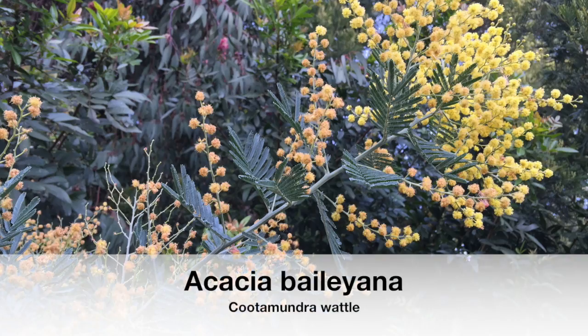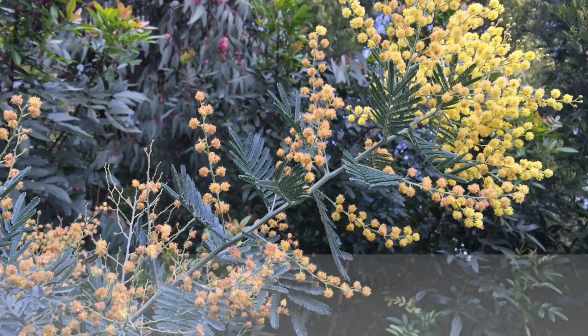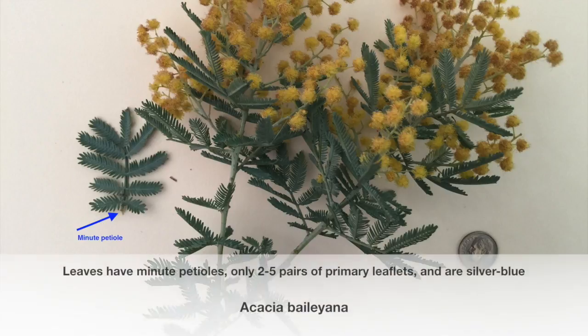The Cootamundra wattle, Acacia baileyana, is another species of acacia with yellow flowers, but the leaves have small or minute petioles — the little stalk of the leaf — with only two to five pairs of primary leaflets, and are silver-blue in color.